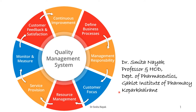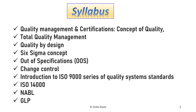Let us move forward and understand what this chapter is all about. In this chapter, we are going to learn the following topics: concepts of quality, total quality management or TQM, QBD or quality by design, six sigma concept, OOS that is out of specification, and change control, which we have already seen briefly earlier.